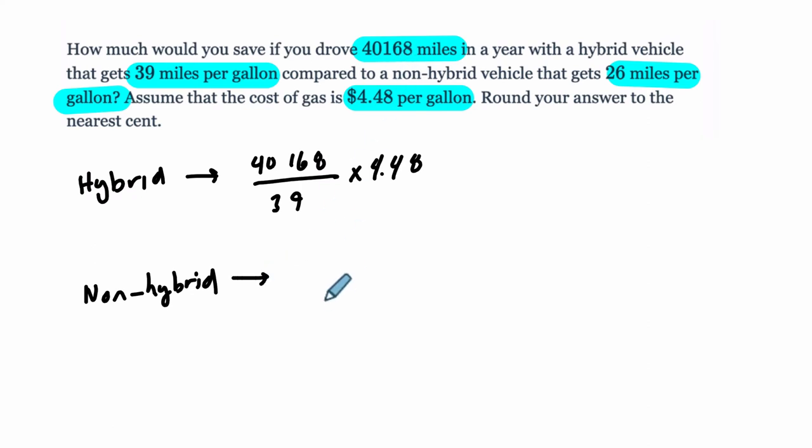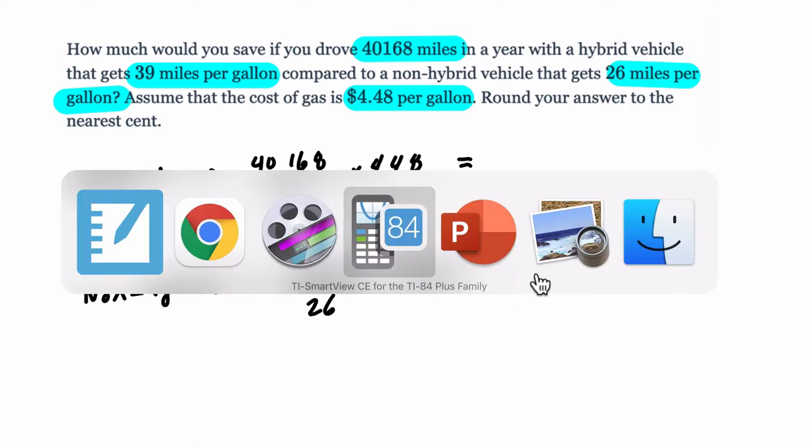Whereas for the non-hybrid, it's basically the same thing, except I'm dividing by 26. And then we'll multiply that by 4.48 as well. And then we'll subtract these two things. So we can do it all in one step on the calculator. I think we'll be brave and do that. But I just want to point out that you could find them out separately, and then subtract them. Actually, we'll do that. We'll do it separately, and then subtract them. So let's get started.